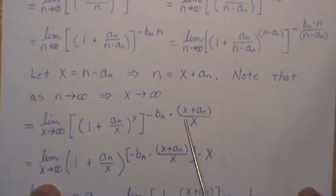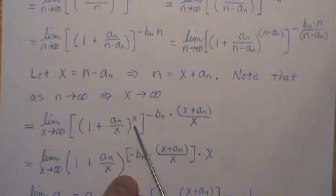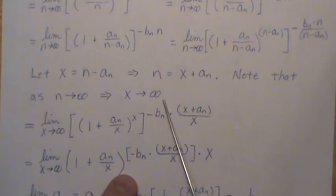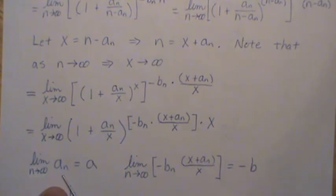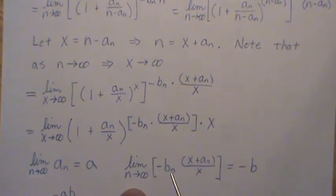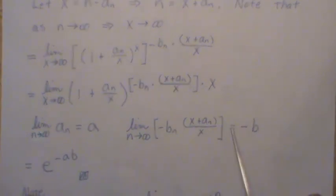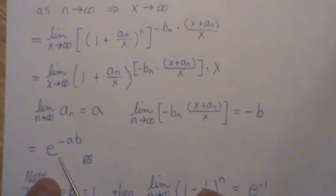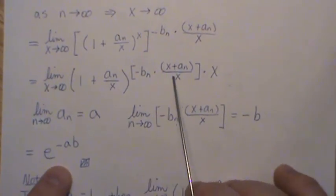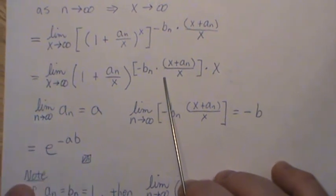So when we multiply this back into this piece, right, everything else is the same. But this X is here and this piece is here. So now note that the limit of a_n goes to a by assumption. But then the limit of this piece goes to b, right? Because this limits to 1 and this limits to, I guess, minus b. So now this is using part 1. This converges to e to the ab, the minus ab. And we're done.